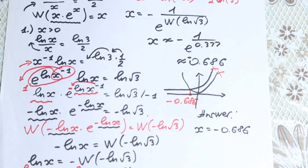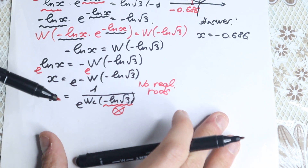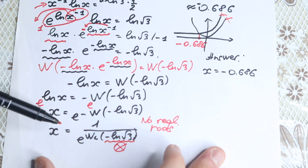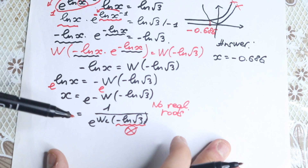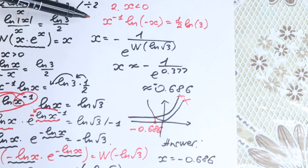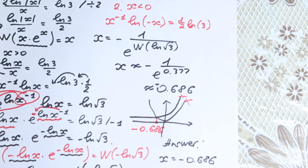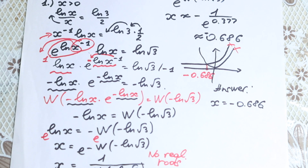So our answer is x equals minus 0.686. This is the solution to this problem. To summarize: if x is positive, there is no solution — no real roots. If x is negative, we get the one solution: x equals minus 0.686. Thank you for watching, see you in the next videos. Have a great day!